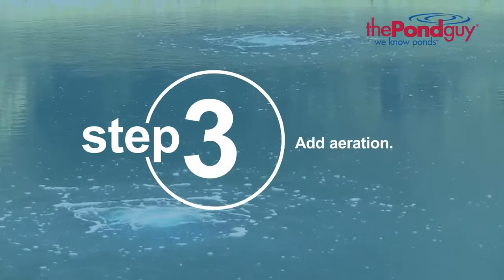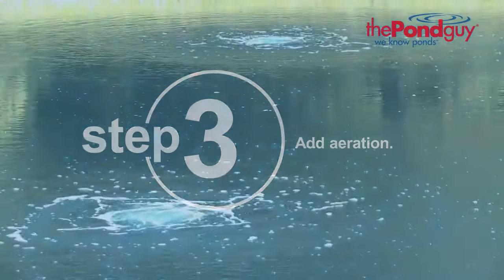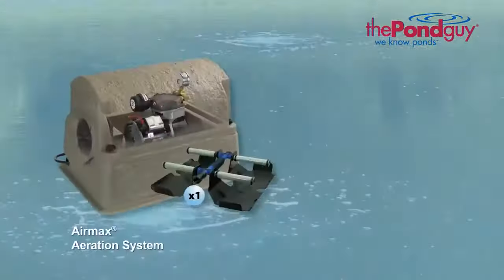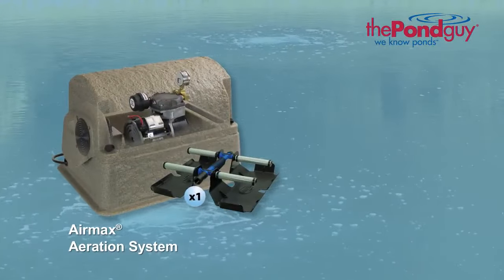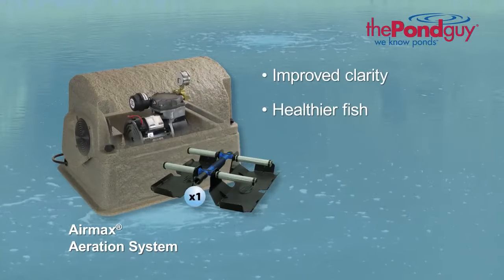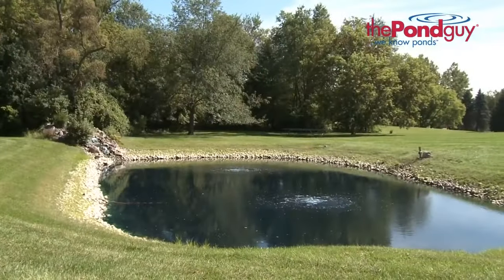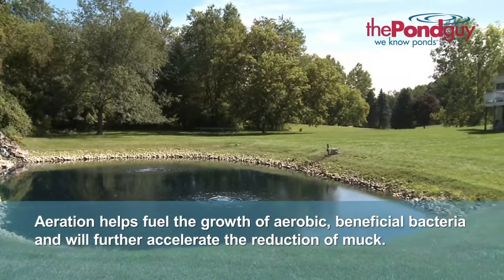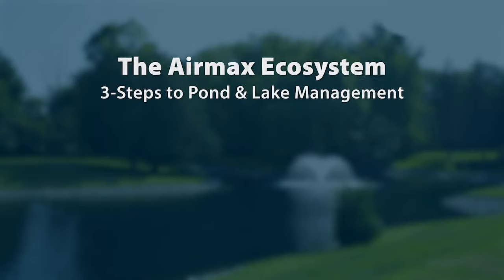Step three: add aeration. The final step is to continue supporting your muck reducing efforts with the addition of aeration. Aeration, like the AirMax aeration system, provides numerous pond benefits including improved water clarity, healthier fish, and muck reduction. Because aeration saturates oxygen throughout the pond, this helps fuel the growth of aerobic beneficial bacteria and will further accelerate the reduction of muck.